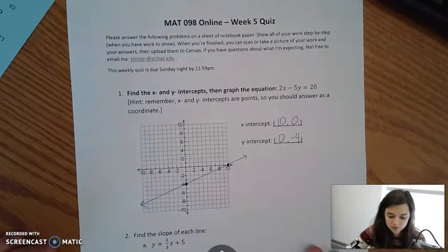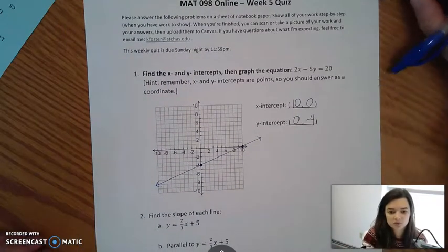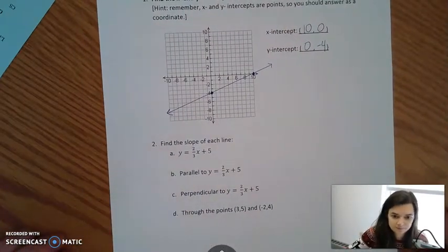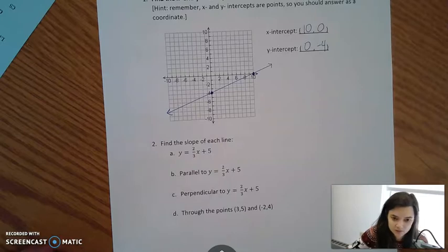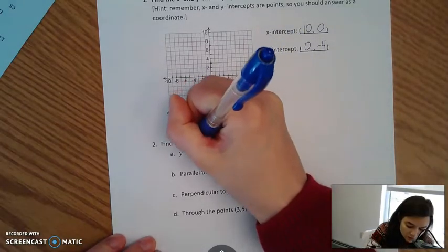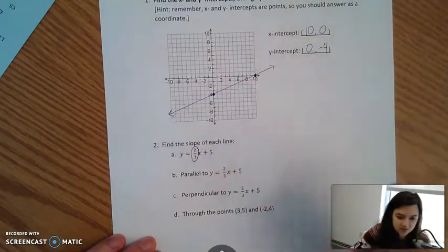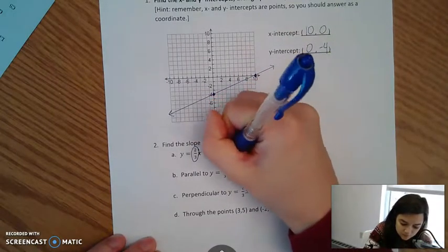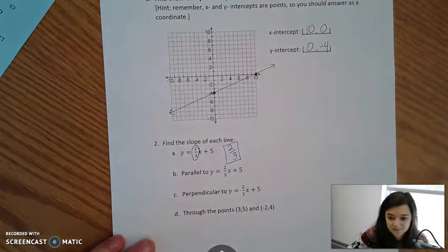Question number 2 is all about slope. So I'm asking you to find the slope of each line. In part A, we are in intercept form. We have y equals 2/3 x plus 5. In slope-intercept form, the coefficient next to the x, that 2/3, is your slope. And that's that.